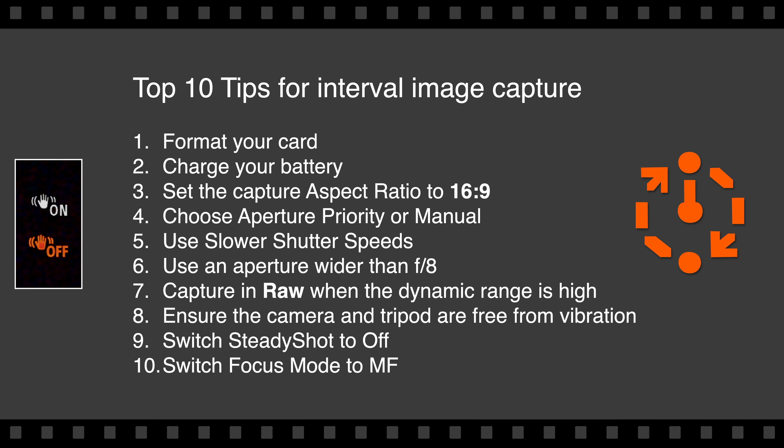Here are my top 10 tips for interval image capture. Number one: format your card — you don't want a card that's nearly full because you're going to be capturing hundreds of images. Number two: charge your battery, for the same reason — the camera might be shooting for over half an hour. Number three: set the capture aspect ratio to 16:9, which is the aspect ratio of movies, since your sensor's aspect ratio is 3:2. Number four: choose aperture priority or manual as your shooting mode.